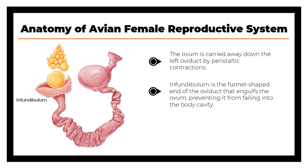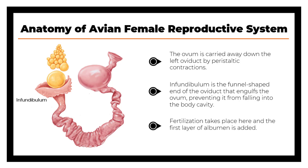The infundibulum is the funnel-shaped end of the oviduct that engulfs the ovum, preventing it from falling into the body cavity. Fertilization takes place here and a first layer of albumen is added. It is assumed that the spermatozoa would not be able to penetrate the oocyte after it begins to be covered by the albumen.